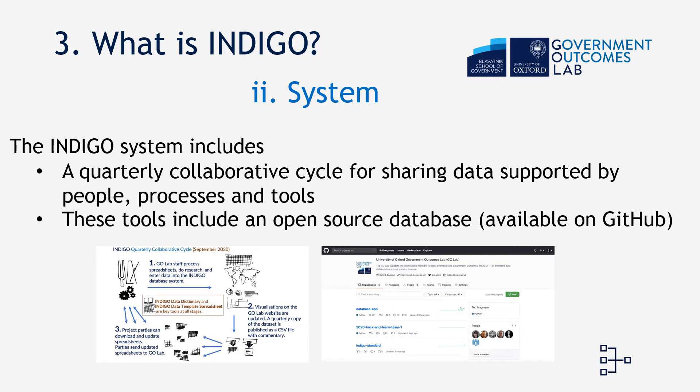The second layer — the middle pancake — is system. The Indigo system includes a quarterly collaborative cycle for sharing data. The cycle is supported by people, processes, and tools. These tools include an open source database, the code for which is available on our GitHub site.